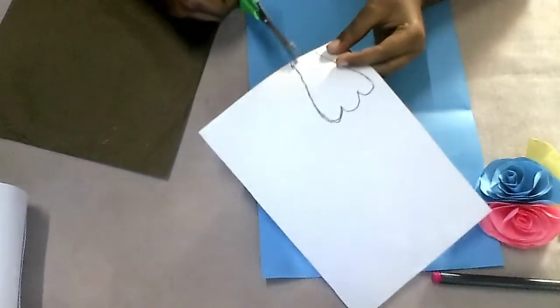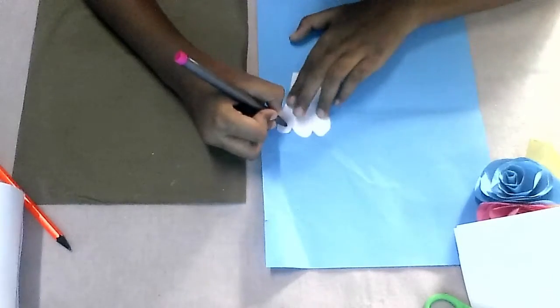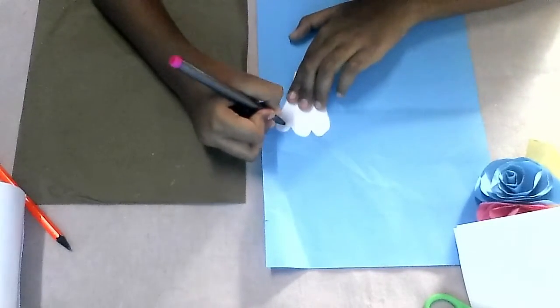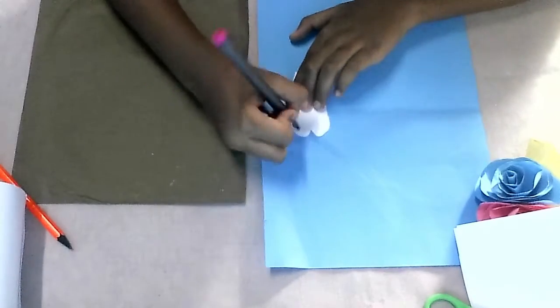Now I am going to cut the leg. Now I am putting three circles on these legs. Like this.